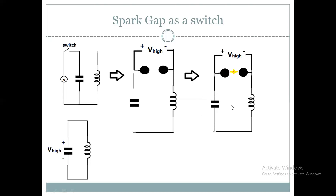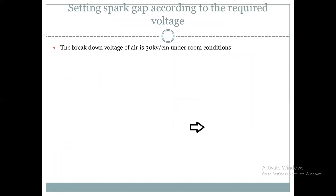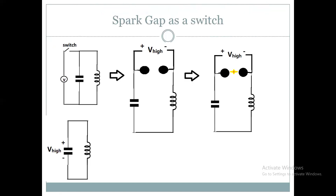अब spark gap की settings कितनी रखें — for example अगर मैं capacitor को 60 kV, 100 kV, या 150 kV तक charge करना चाहता हूं, यह कैसे होगा? आपको पता है air की breakdown voltage room conditions — temperature और humidity — के अंदर 30 kV per centimeter होती है। For example अगर sphere gap के अंदर एक centimeter का फासला रखा है तो sphere gap 30 kV पर fire हो जाएगा। तो अगर gap 1 cm रखा है और voltage increase करते जाएं, जो ही 30 kV होगी, capacitor भी charge हो जाएगा।